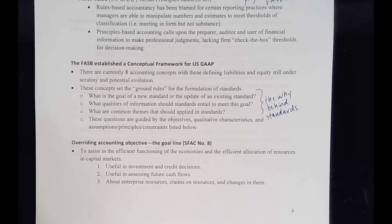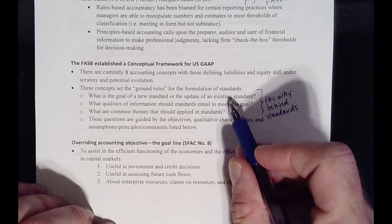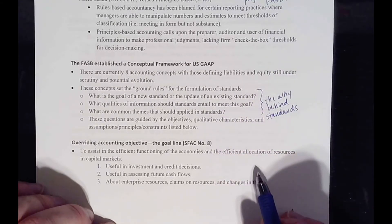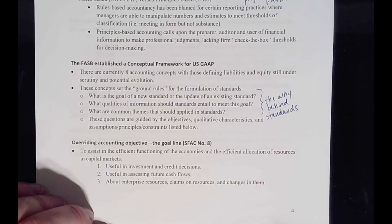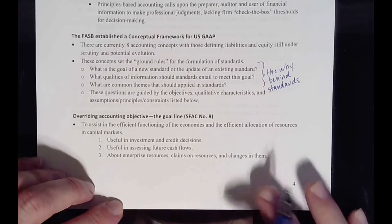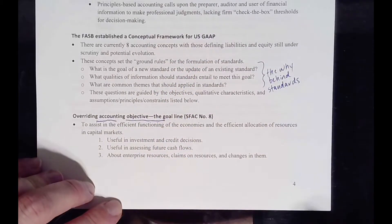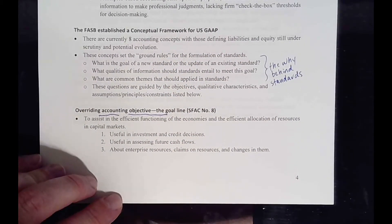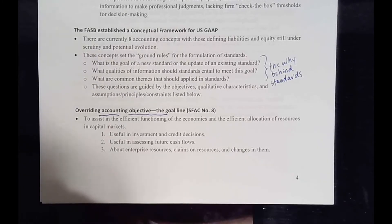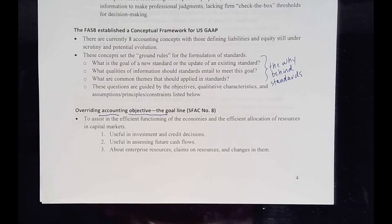These questions are going to form a lot of the rest of our discussion. The first one: what is the goal? That is our accounting objective — the overriding accounting objective. What is the objective of any standard we create, of any rule you find in a textbook on financial accounting? What we're trying to do is assist in the efficient functioning of economies and the efficient allocation of resources and capital markets. That is what financial reporting is meant to do.